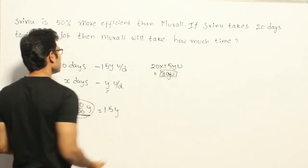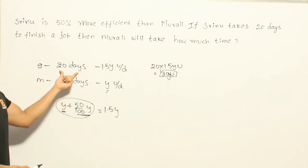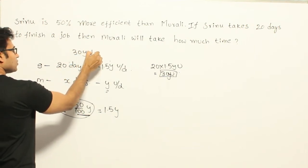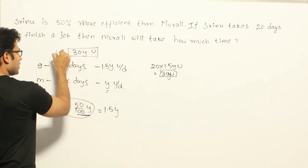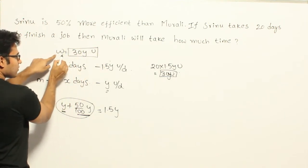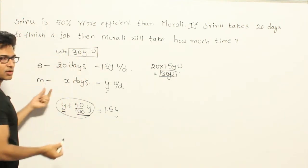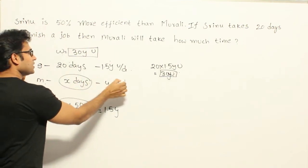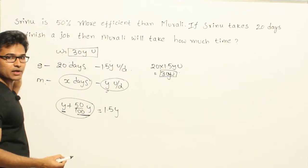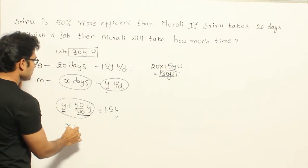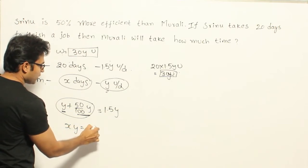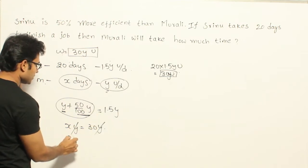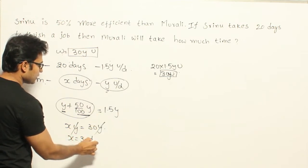So 30Y is the total work done by Sreedoo. Now this same work will also have to be finished by Murali. Therefore the total work done by Murali is X days into Y units per day. Therefore X into Y equals 30Y, which gives us X equal to 30 days.